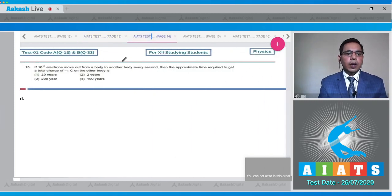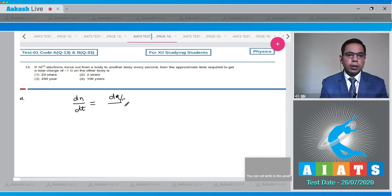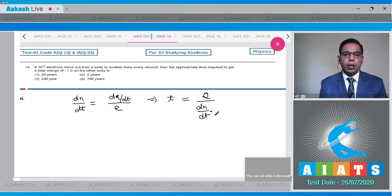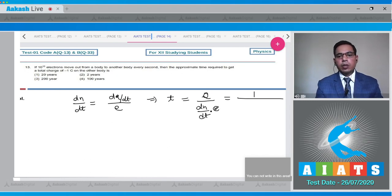Now move to question number 13, which states that if 10 to the power 10 electrons move out from a body every second, then the approximate time required to get a total charge of minus 1 coulomb on the other body is? We know that dn upon dt is known as dq upon dt upon e. If we integrate here then we will get that t will be equal to q upon dn upon dt into e. Putting the value here, q is given as 1 coulomb. Let's take the magnitude because here electric charge has negative charge and here q is also negative charge, they will cancel out.